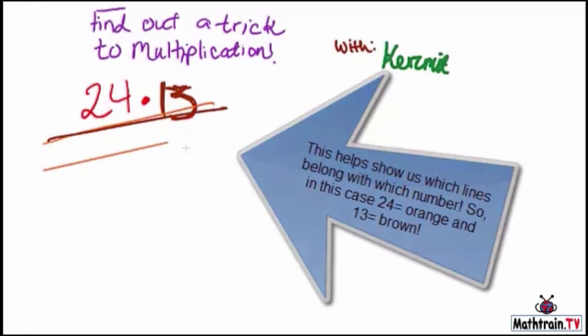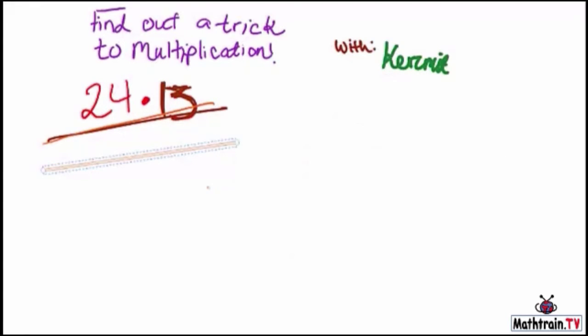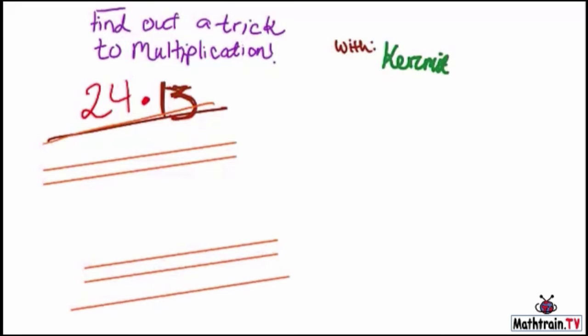So for 24, first we're going to put two lines. One, two, and those two are like tens. They represent the 20 in 24. Now we're going to draw four more lines to represent the four ones. One, two, three, and four.